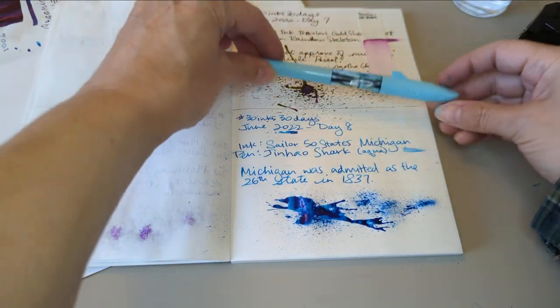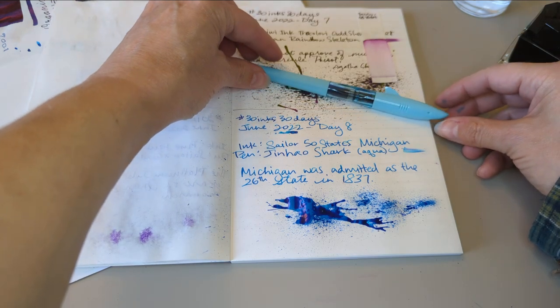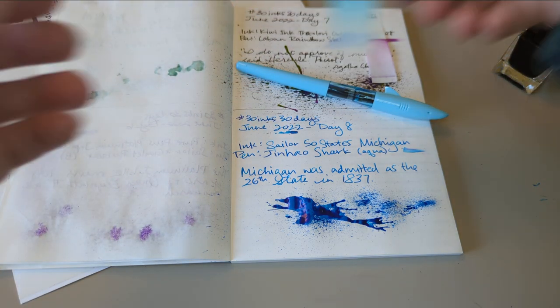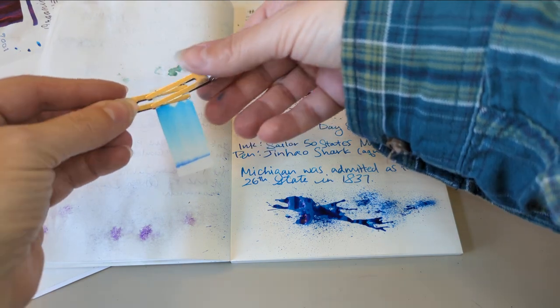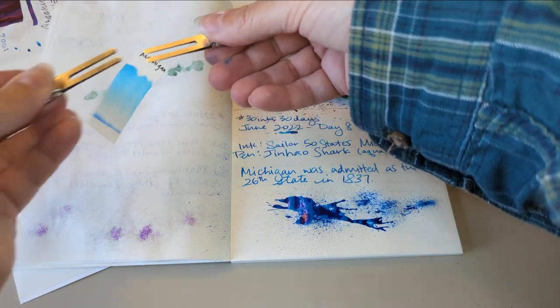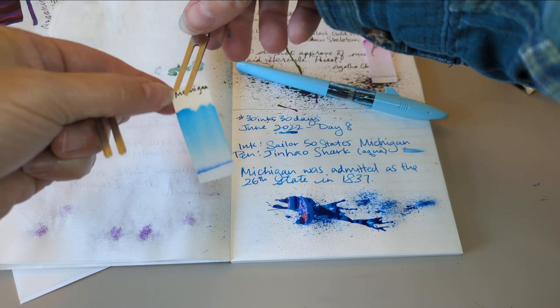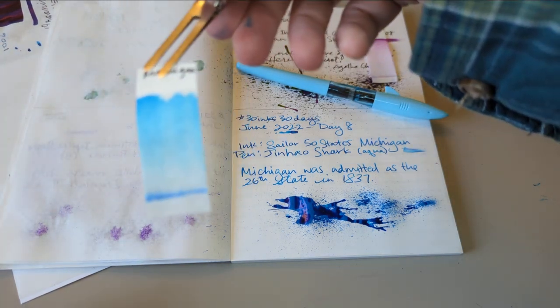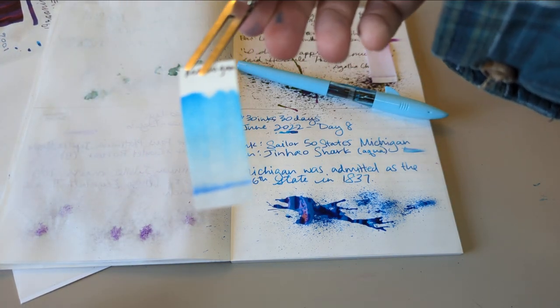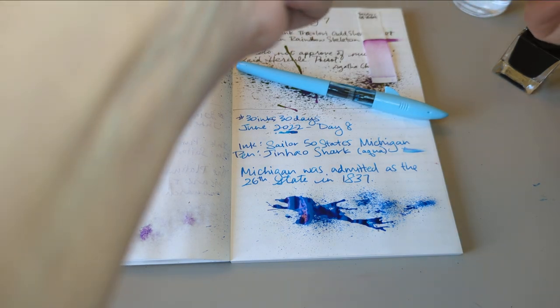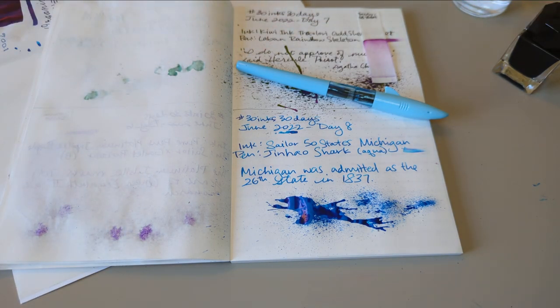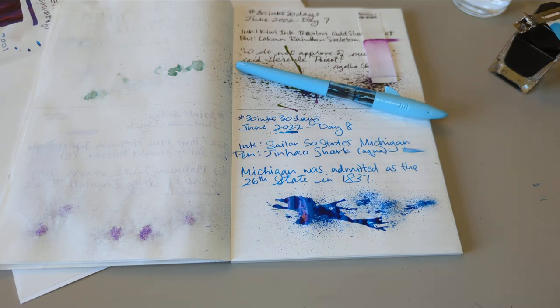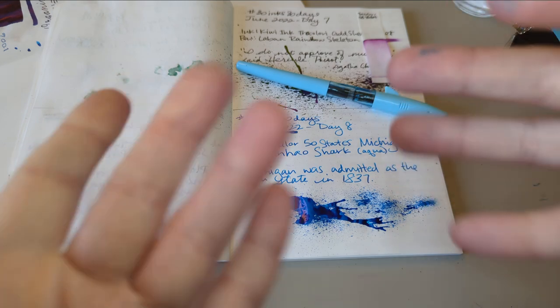Okay. So splactorius. We got our Jinhao shark. We got our... Look, it's growing still. We got our chromatography which shows us blue. And we got Sailor 50 States Michigan. Cheers, everybody. Hope I didn't forget anything. Probably did. Oh, well. Bye.